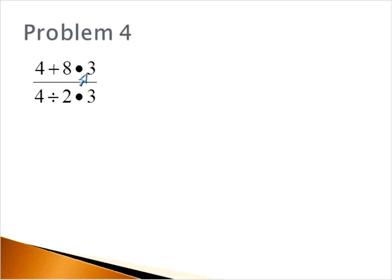So let's take a look. 4 plus 8 times 3. The first thing we would do there is multiplication. 8 times 3 is 24. On the bottom, we have 4 divided by 2 times 3.